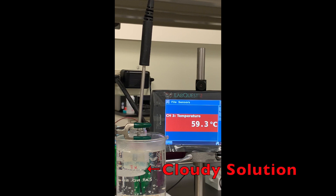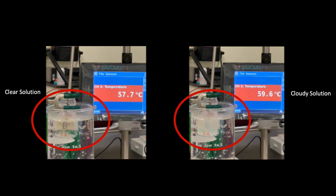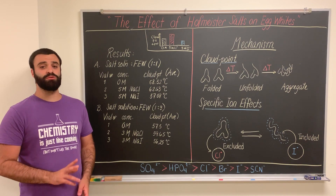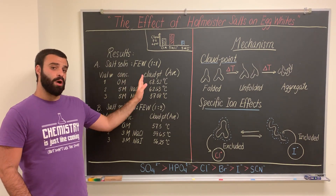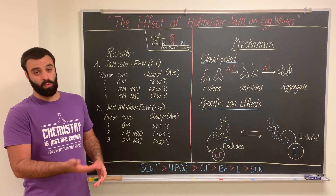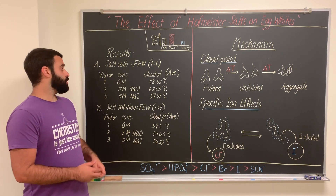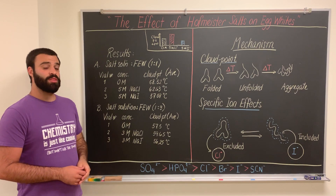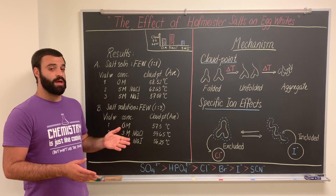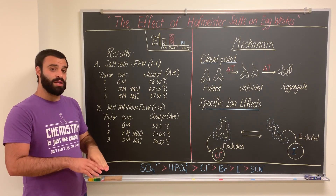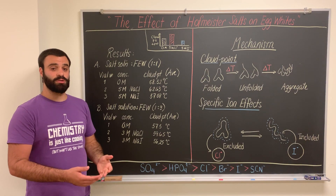Now you can see your solution is turning from clear to cloudy. Now that we've conducted the experiment, let's look at the data. For this lesson plan, we recommend using one of two different solution conditions: either a 1-to-1 salt solution to filtered egg white, or just water to filtered egg white, or a 1-to-3 ratio. Regardless of the conditions, what we see is that when you add salts to solution, the cloud point changes relative to the case without salt. Upon the addition of chloride to solution, the cloud point increases. Upon the addition of iodide to solution, the cloud point decreases.